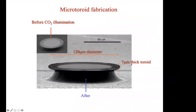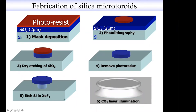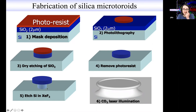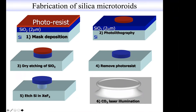Q: Why does dry etching only etch the bottom and base of the silica? A: The xenon difluoride etcher is an isotropic etcher for silicon — it etches silicon equally in all directions but does not attack silicon dioxide significantly. Once you etch the silicon dioxide disk and put it in xenon difluoride, it starts eating away all the silicon around it. You have to time it carefully: take it out before it eats the whole pedestal. The CO₂ laser step still has some art to it, but much less than microsphere fabrication because the geometry is ultimately limited by the disc geometry you fabricated by traditional microfabrication techniques.